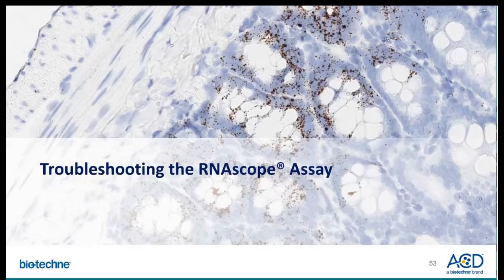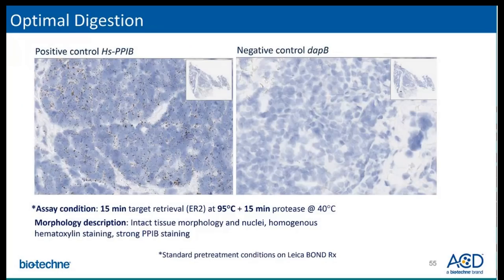Now let's review some troubleshooting examples. This shows optimal digestion with tissue fixed per our recommendations and treated with standard conditions. PPIB staining is strong, while the DapB negative control is clean. Tissue morphology is intact and the hematoxylin staining is homogenous. Note that this assay was run on the Leica Bond RX, so the pretreatment conditions shown are with regards to running on the automated platform.